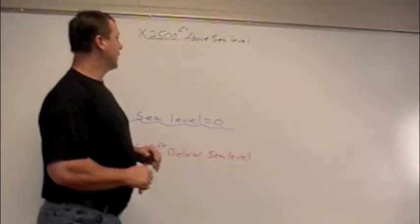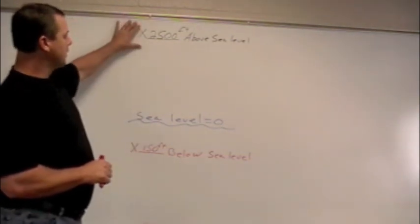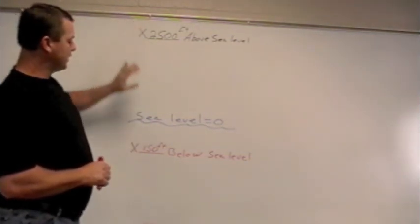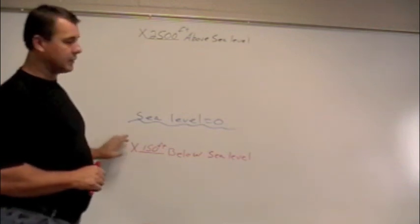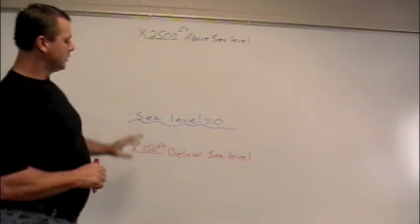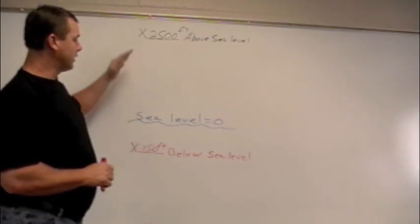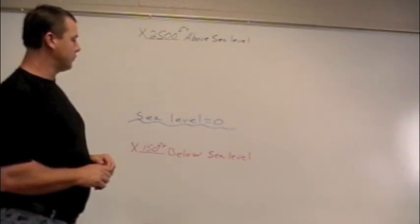Hello. Today we're going to look at a quick review on sea level. We're looking at a distance from above sea level to a distance below sea level. The distance we're using today is 2,500 feet above sea level to a distance 150 feet below sea level. And we're going to figure out what the distance between those two points are.